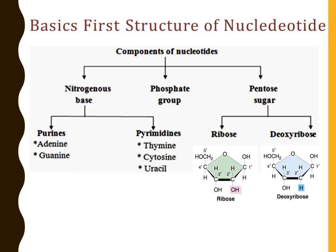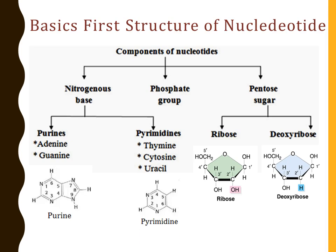Therefore, RNA is more reactive than DNA, as we already know. Now, the nitrogenous bases — there are two types of nitrogenous bases: pyrimidines and purines, and here we have shown the structure and skeleton of these nitrogenous bases.